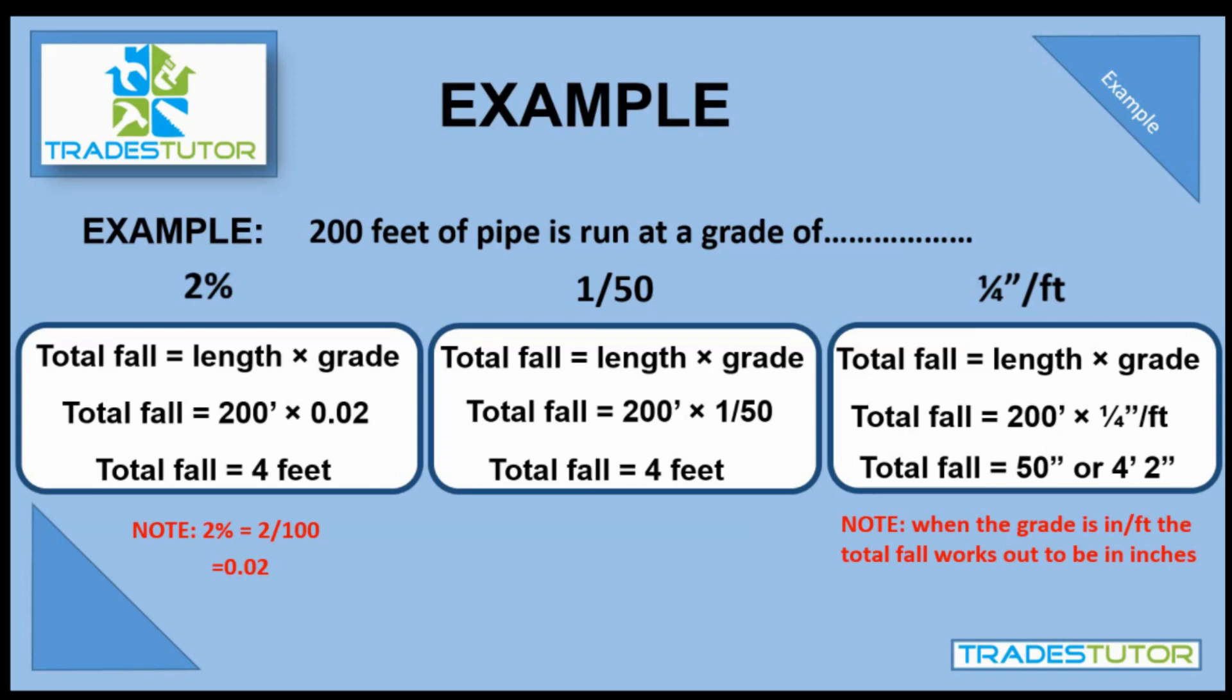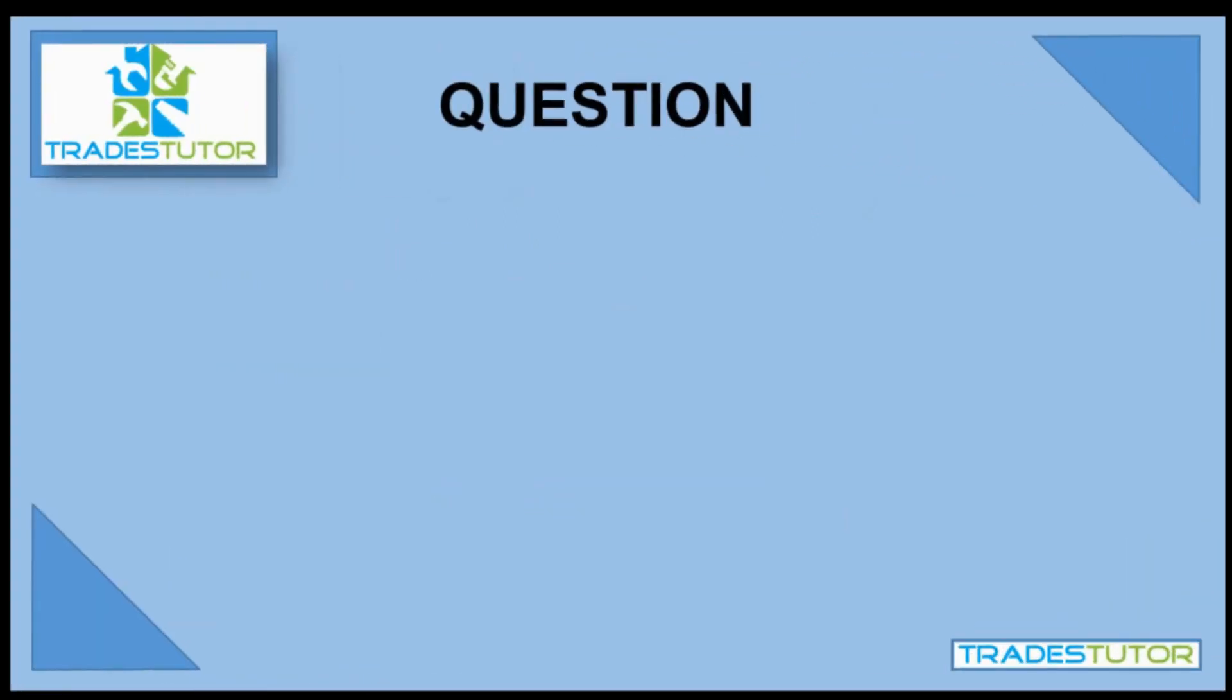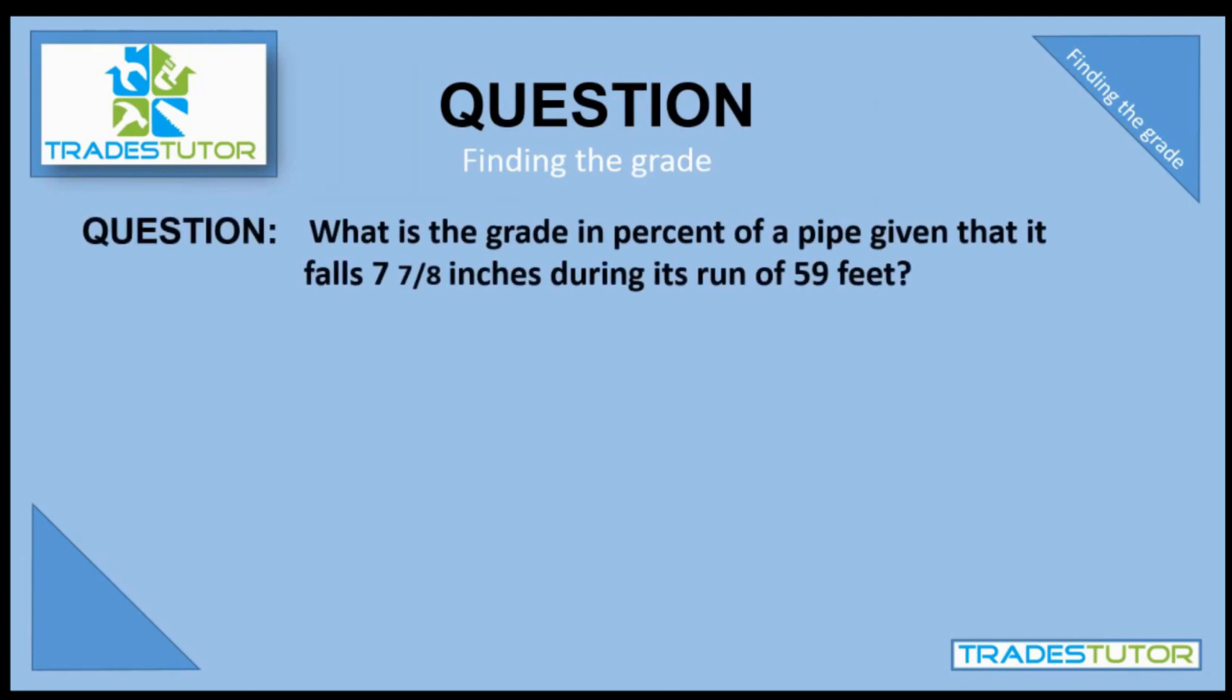All right, now I want to go through one more thing with you because it's a little more complicated, just another question, and this is about finding the grade. So there's your question: you want to find the grade in percent form. The pipe runs 59 feet, and during that run it falls seven and seven eighths inches. You want to find the grade. How do you do that? Well, we start with our formula. Total fall is length times grade. Now we've got to change it up to solve for grade.